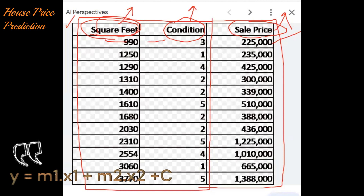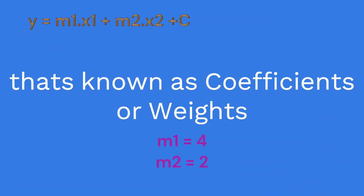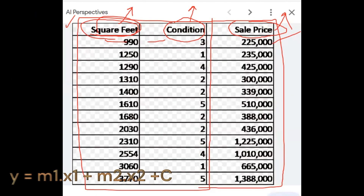The equation becomes y equals the contribution of x1 plus the contribution of x2 in predicting y. For example, x1 contributes with a coefficient of 4 and x2 with a coefficient of 2. These values — 4 and 2 — are what the model is learning in supervised learning. There is a learning process where the model learns the coefficients, or weights, of x1 and x2. These coefficients represent the weightage of each input feature in predicting y.